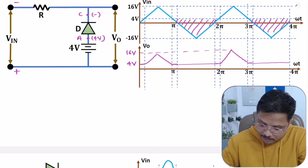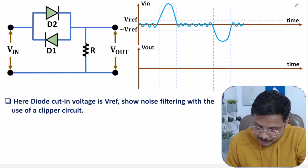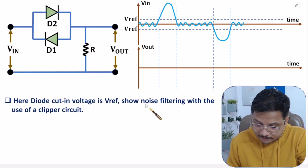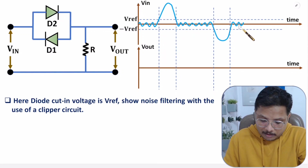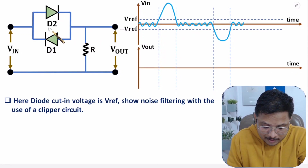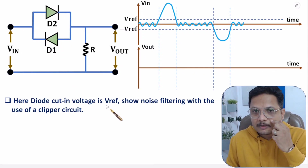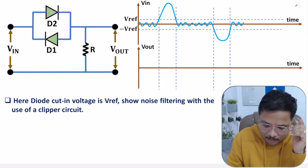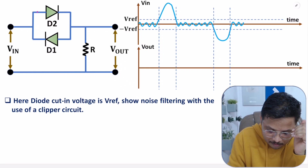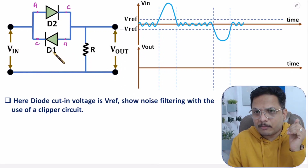In the second question, we are required to filter noise. The input is having noise that we need to filter. For filtration, we have two diodes D1 and D2, having a cut-in voltage V_ref. Two diodes are connected back to back with opposite connection: here we have anode and cathode for one diode, and cathode and anode for the other — a back-to-back connection.